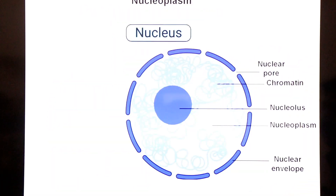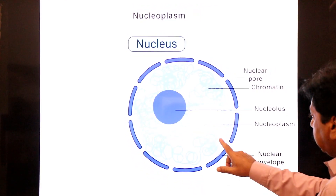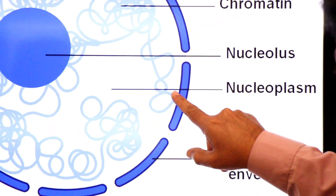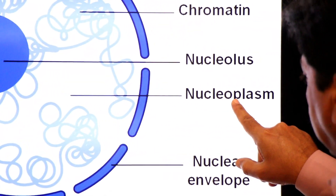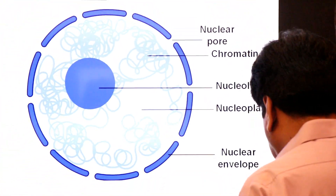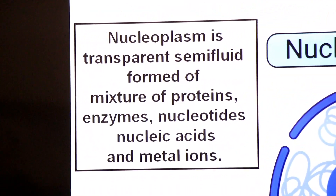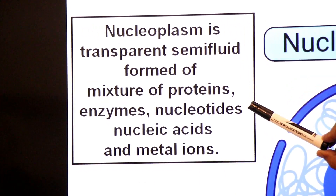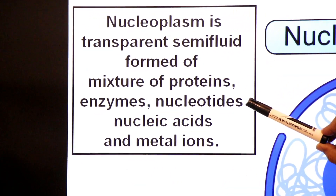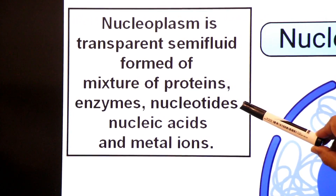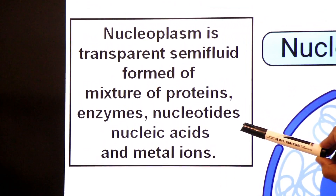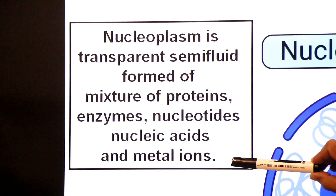What is nucleoplasm? Nucleoplasm is a transparent semi-fluid formed of a mixture of proteins, enzymes, nucleotides, nucleic acids, and metal ions.